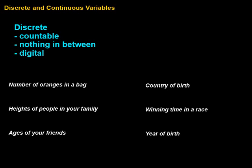Discrete variables are things that are countable. There's a certain number of them. There might be an infinite number, but they're always countable. There's nothing in between. If you have two of them — for example, the number of markers — we could have one or we could have two, but we couldn't have any of those numbers that are between. Remember, there's things like 1.5, 1.25. Between there, that would not be discrete, a variable that described the number of markers.